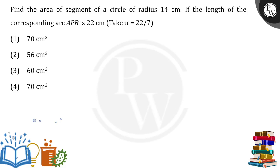In this problem, we are asked for the area of the segment where the radius is given and the length of the arc is given. First of all, from the length of the arc we can calculate the central angle. The formula is: arc length equals theta by 360 degrees into 2 pi r. Substituting, 22 equals theta by 360 degrees into 2 pi r.